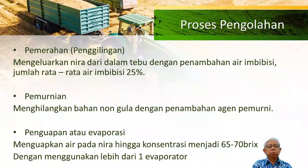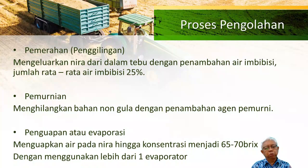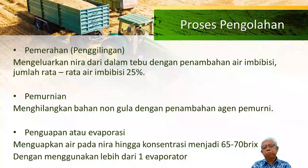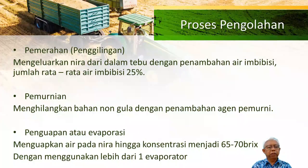Kemudian klarifikasi atau stasiun pemurnian digunakan untuk menghilangkan bahan-bahan non-gula dengan penambahan agen pemurni. Agen pemurninya ini adalah koagulan dan flokulan. Biasanya yang banyak dipakai itu susu kapur, untuk memisahkan koloid-koloid atau padatan tersuspensi yang ada di dalam larutan nira. Populasi ini sampai sekitar 70 derajat Brix.